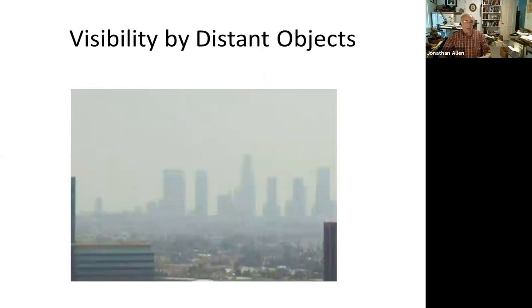Visibility traditionally was done by having landmarks that were identified at a known distance from the weather station. An observer with a sharp eye would look out at these landmarks, and the furthest away one he could make out with decent resolution was defined as the visibility distance.